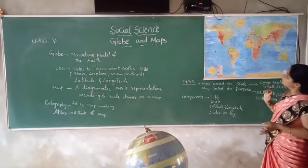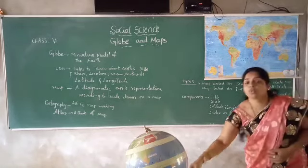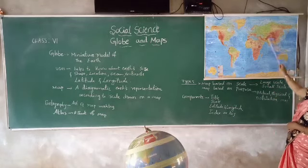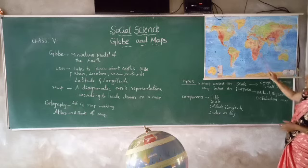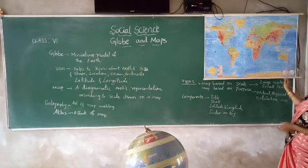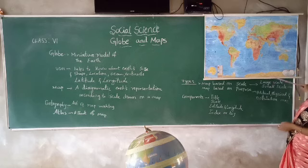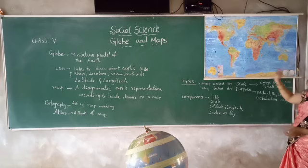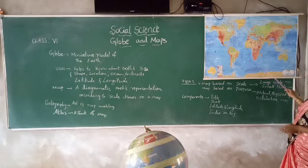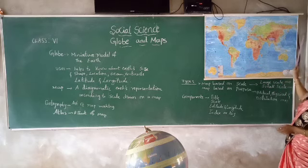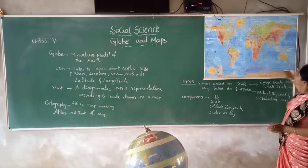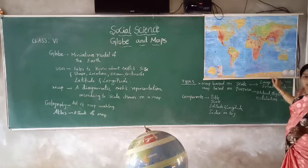Now I can show you — here Asia, then Europe, Africa, North America, South America, Australia, and here Antarctica. The same thing: Pacific Ocean, Atlantic Ocean, Southern Ocean, Indian Ocean, as well as Arctic Ocean. Like this, we can identify the land boundaries.